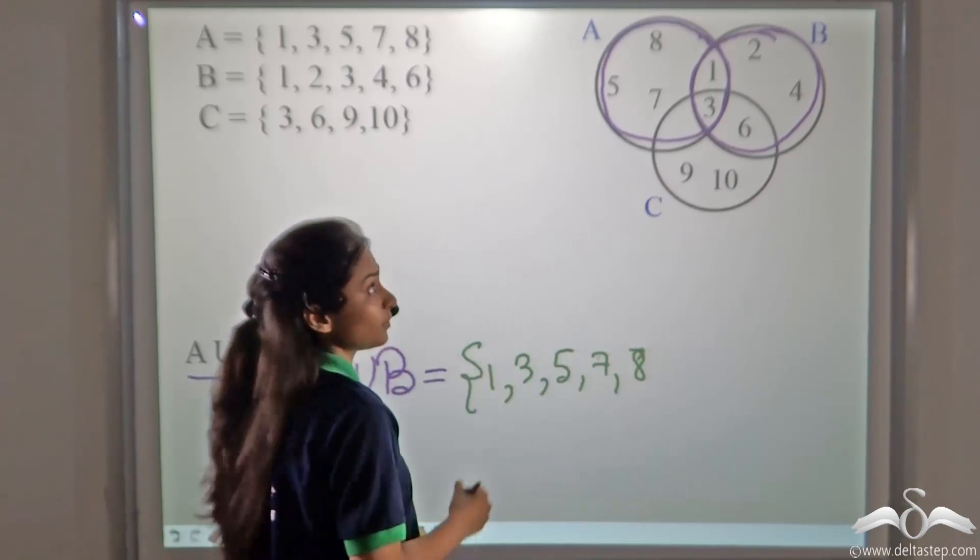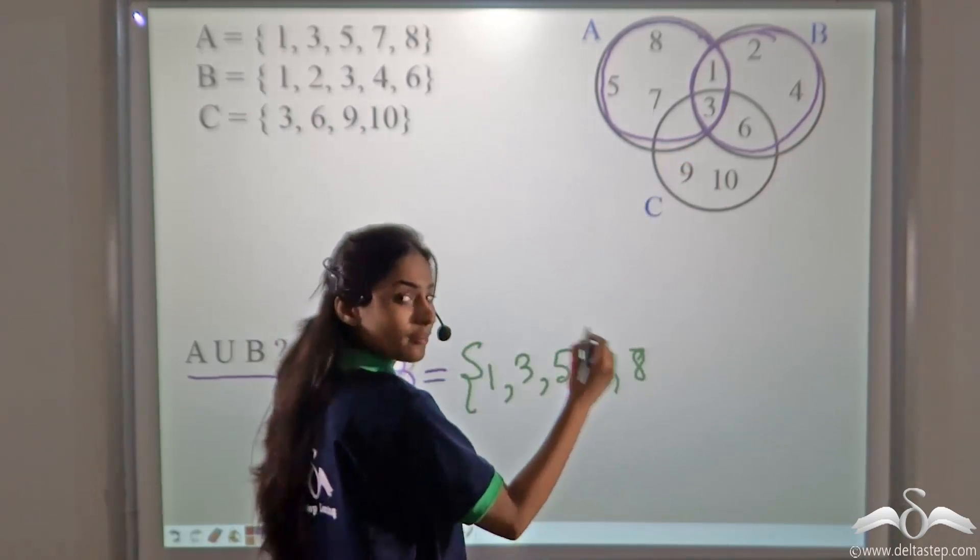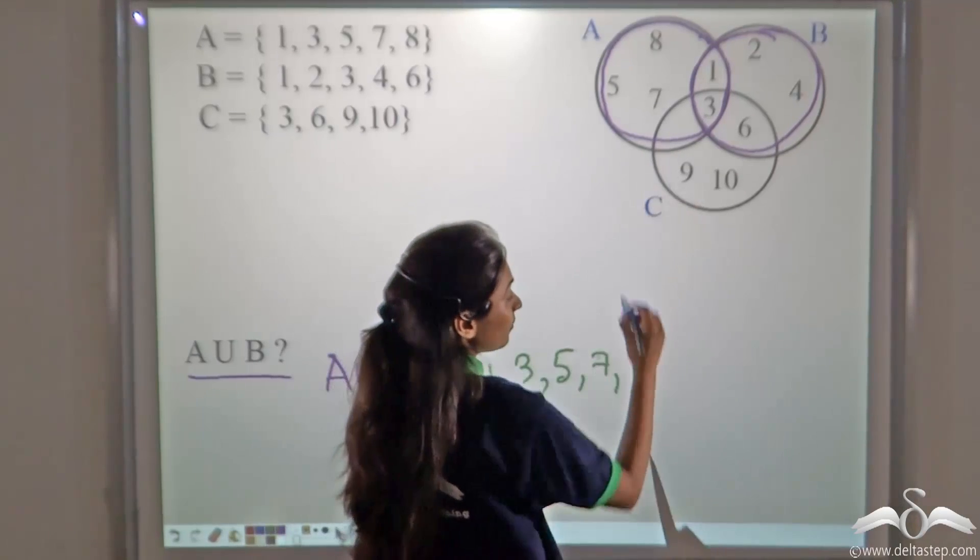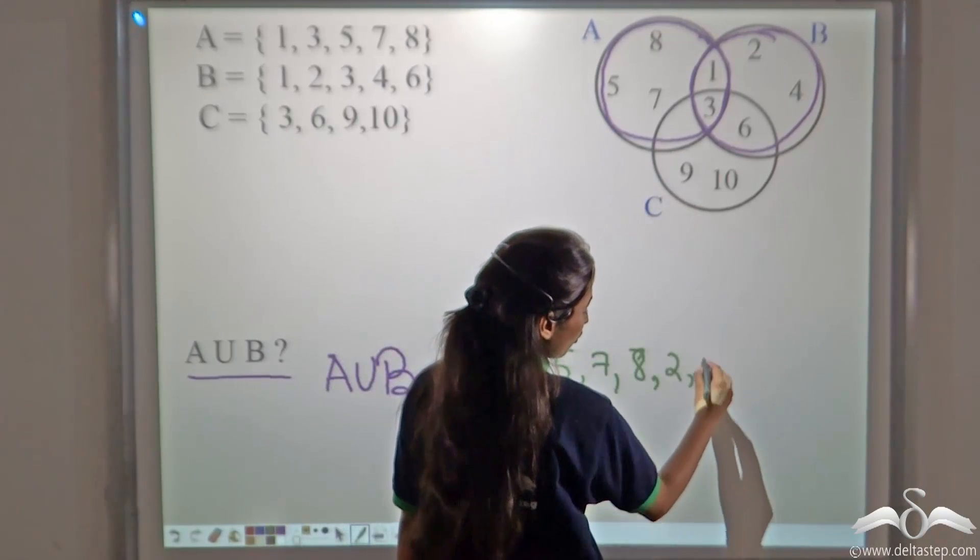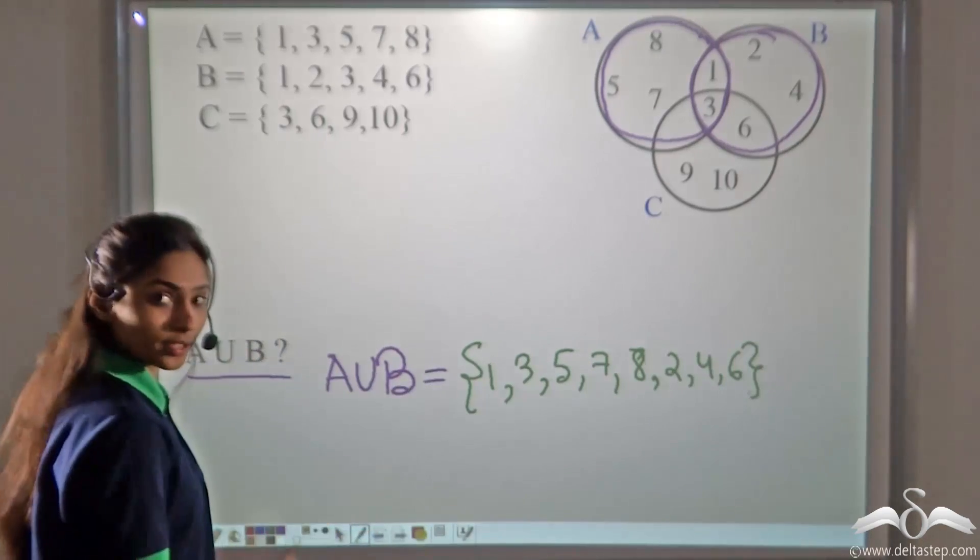Then we write the set of elements present in B. But we will not repeat 1 and 3 as we have already written that as elements of A. What are the other elements present? 2, 4 and 6. So we got A union B.